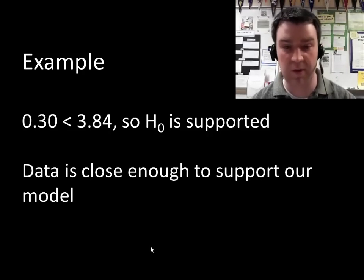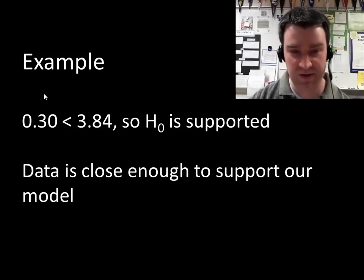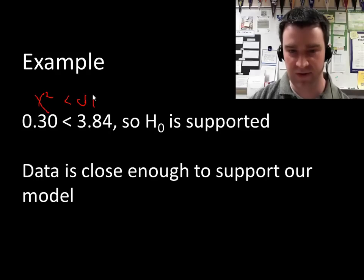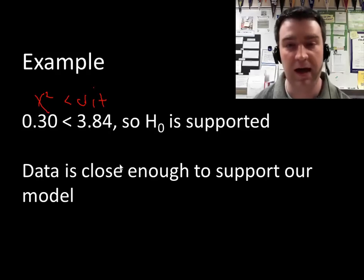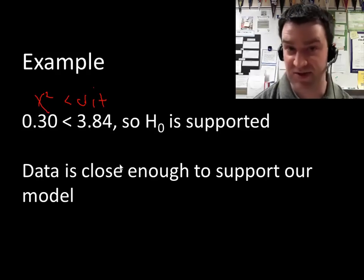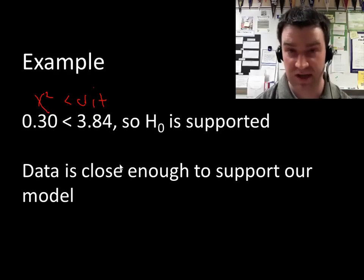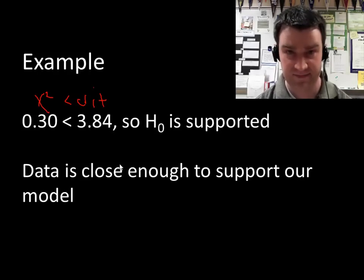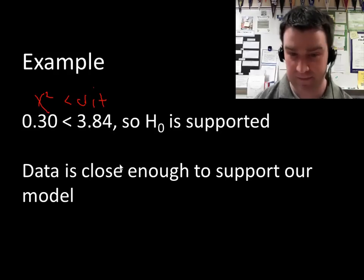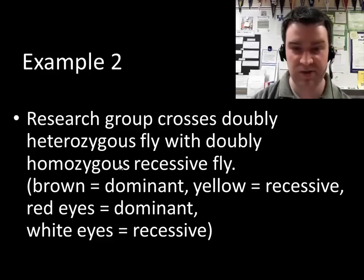Because our original chi-squared number of 0.30 is less than our critical value of 3.84, we can say that the null hypothesis was supported — we were close enough to what we expected to get.